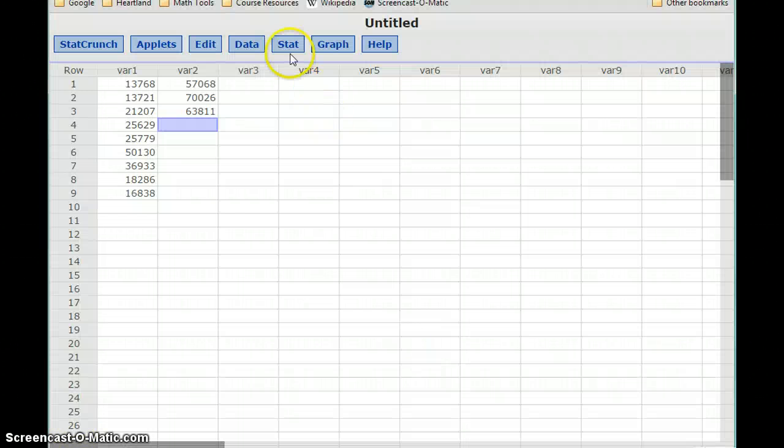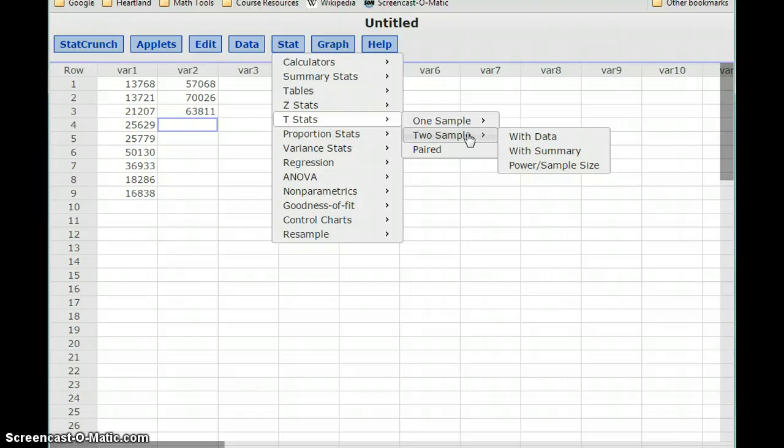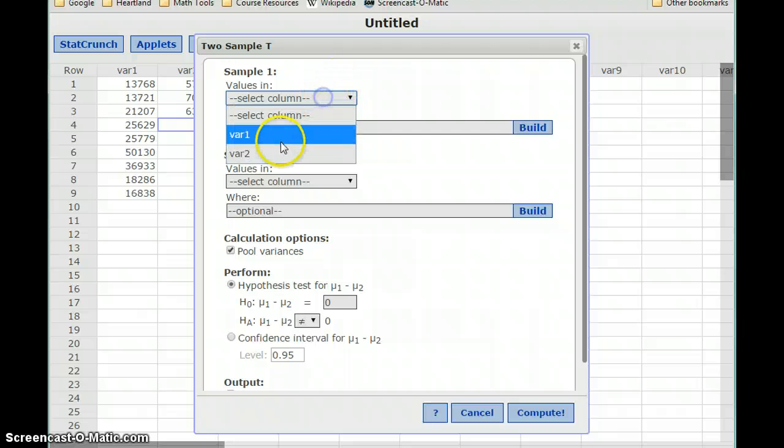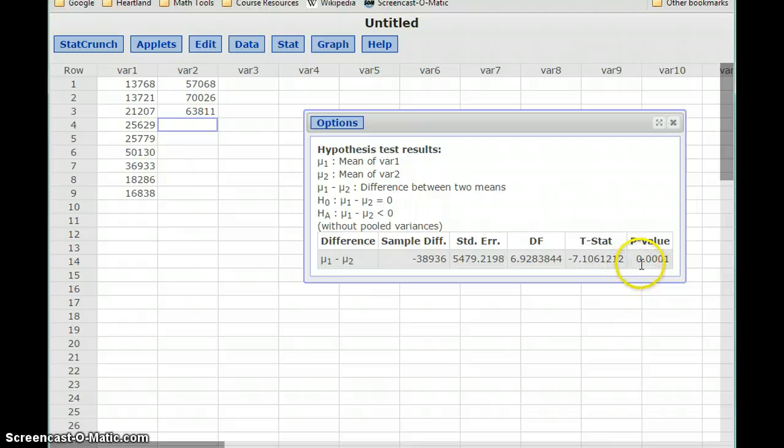So we can flip over to StatCrunch to conduct our test. So in this case, we have independent samples, so we're going to select the two-sample t-test with data. We could also do this with summary information if we were given the mean and standard deviation. So we'll select with data, we'll select variable one, variable two, and then set up our alternative hypothesis, which in this case is less than. And we'll also make sure that we uncheck that pool variances option. Clicking Compute gives us a p-value of 0.0001.